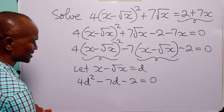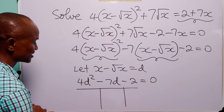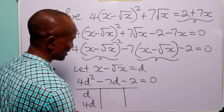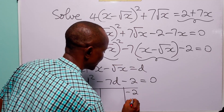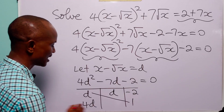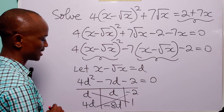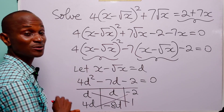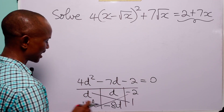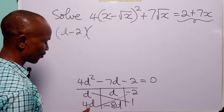Now, we can factorize this quadratic equation. Let us use the table method. The factors of 4d squared are d and 4d, while the factors of minus 2 are minus 2 and 1. d times 1 is equal to d, and 4d times minus 2 is equal to minus 8d. And minus 8d plus d is equal to minus 7d. So, from here, we have that the factors of this quadratic equation are d minus 2 and 4d plus 1.